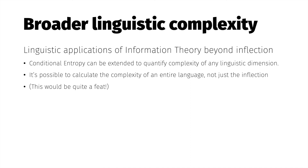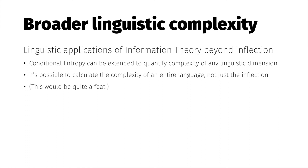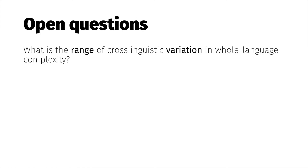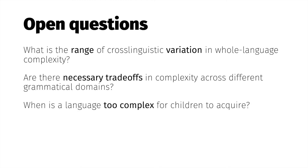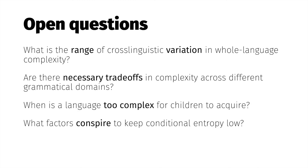But pursuing whole-language complexity metrics might allow us to address some fundamental questions: How much does linguistic complexity vary? Does complexity in one grammatical domain necessitate simplicity in another? What would make a language too complex for a child to acquire? And perhaps relatedly, what factors conspire to ensure Ackerman and Malouf's observation that average conditional entropy is so low?